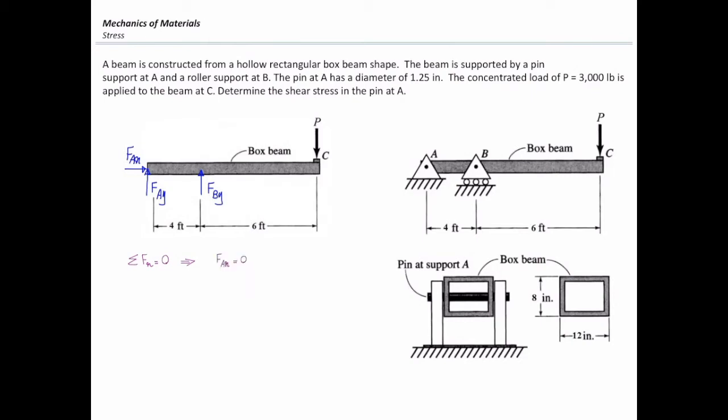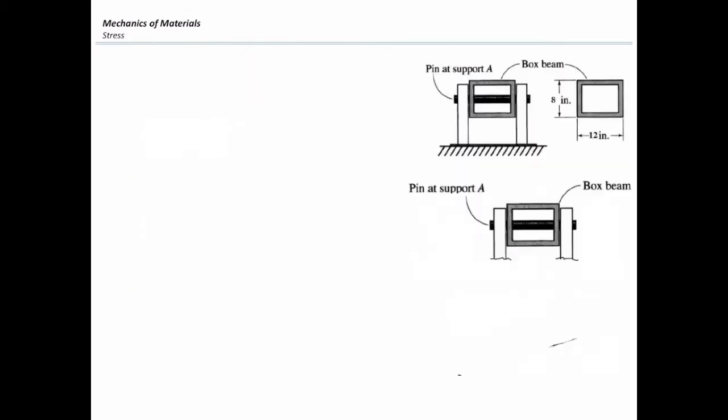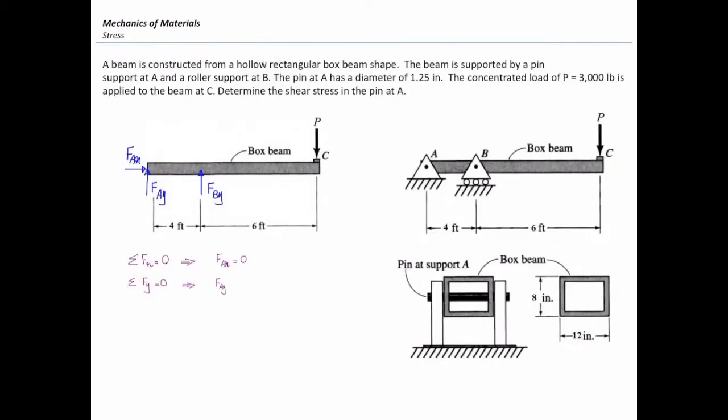There is no horizontal force in the system. Sum of the forces in y direction. How many forces do we have in y direction? Three. FAy and FBy are going upward. I assume that is positive. So I will write down FAy plus FBy are equal to P.